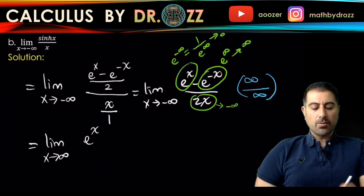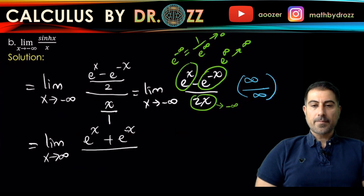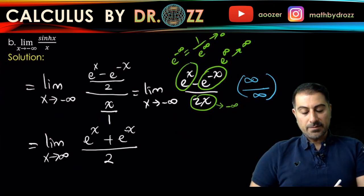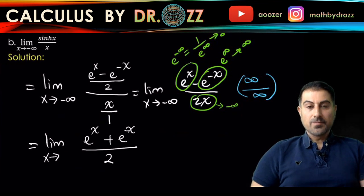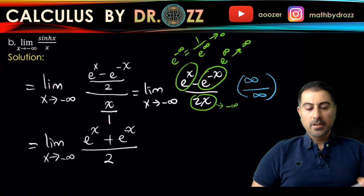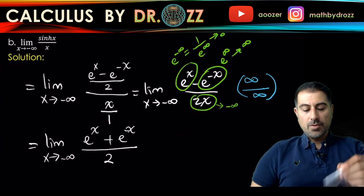That makes the whole thing plus, and you have 2 in the bottom. That's good news because the bottom is constant now. And by the way, this is minus infinity.